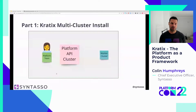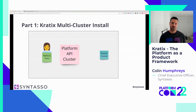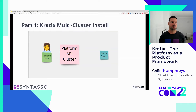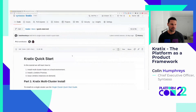Let's get started with the demo. First, we're going to put on the hat of a platform team member. We're going to build a platform API cluster, install Kratix to that cluster, and then create a worker cluster for scheduling workloads requested by the application teams. We're going to follow the quick start on the Kratix GitHub repository in the Syntasso organization.